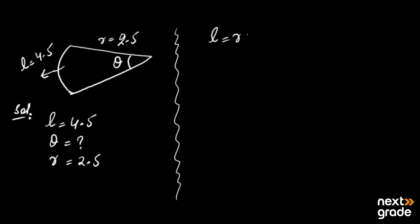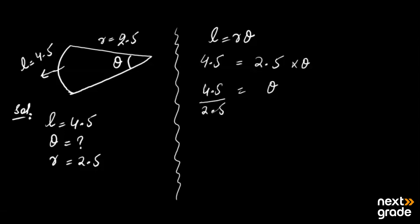Using the formula L equals R theta: L is 4.5, theta is unknown, and R is 2.5. We rearrange to find theta: theta equals L divided by R, which is 4.5 divided by 2.5. If you divide them, the answer is 1.8. So theta equals 1.8 radians.